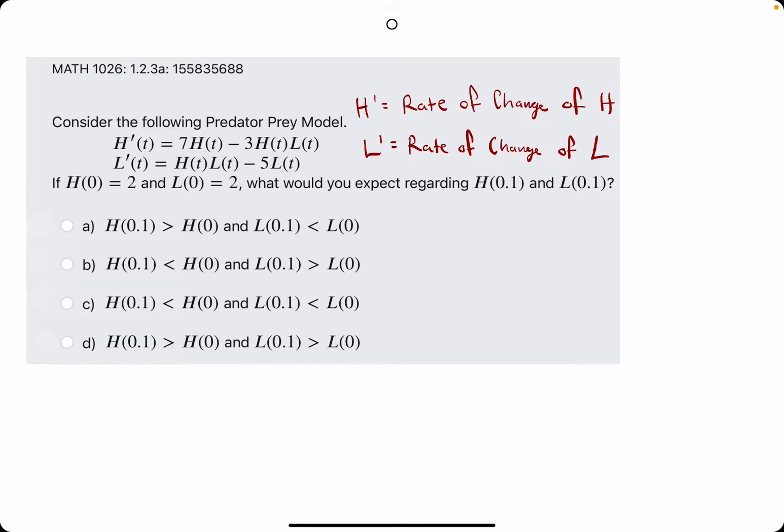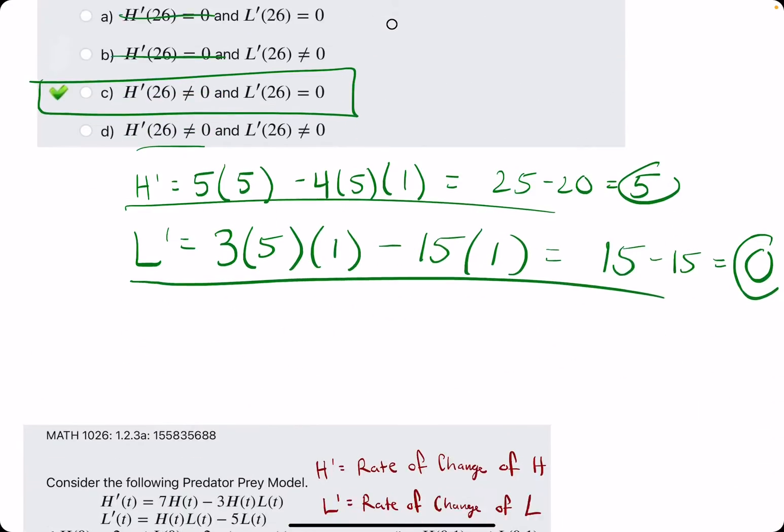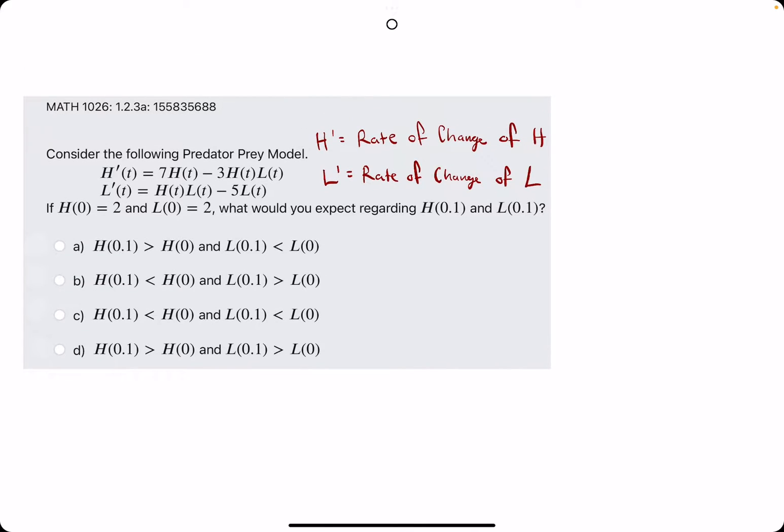Okie dokie. In this problem, we will be using a very similar method as we did in 1.2.3b. However, in this one, we'll do something a little bit different with the information that we calculate. The first step is still the same in this problem.